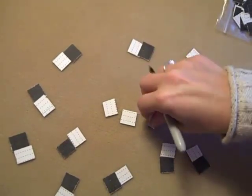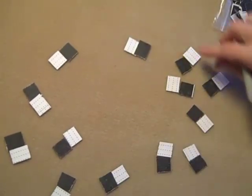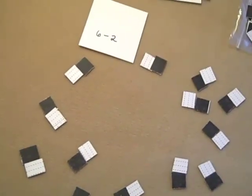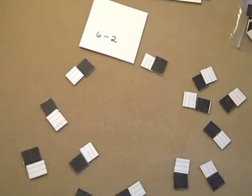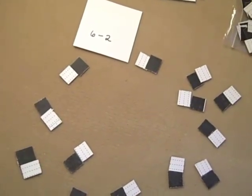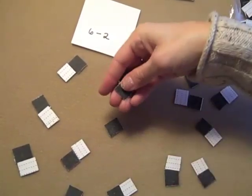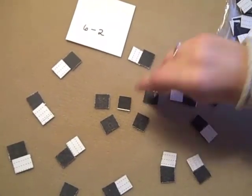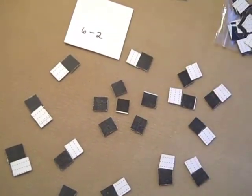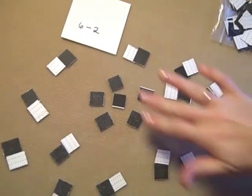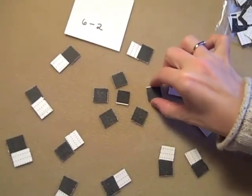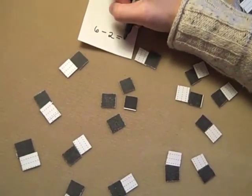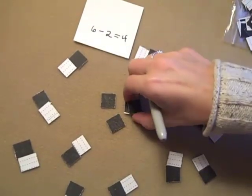This brings us to subtraction, which is actually the harder concept, but once you have the sea of zeros, it's easier. We'll start with a simple subtraction. With addition we're always putting in, with subtraction we're going to take out. We start with 6: 1, 2, 3, 4, 5, 6. Whenever we have subtraction, it's a take away. I have 6 here, and I'm going to take away positive 2, which leaves me with 4.